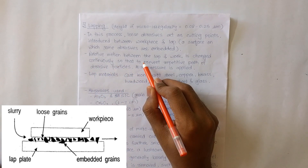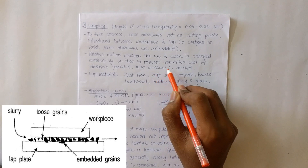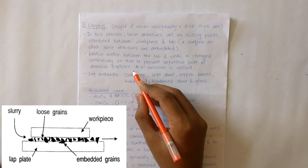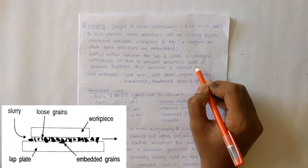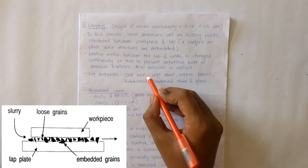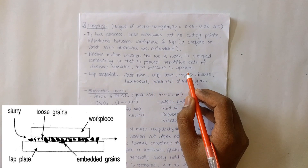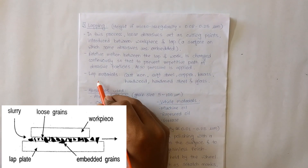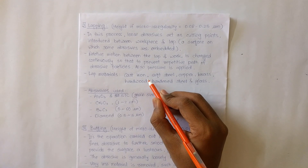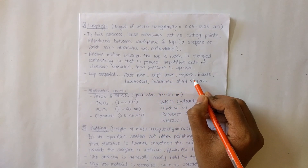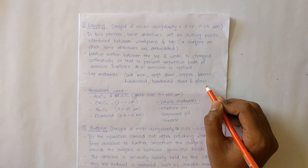Relative motion between the lap and workpiece is changed continuously to prevent the repetitive path of abrasive particles. Pressure is also applied between the workpiece and tool. Lap materials used include cast iron (most common), soft steel, copper, brass, hardwood, hardened steel, and glass.